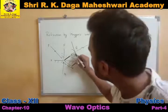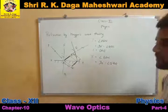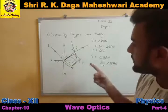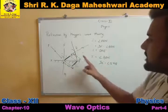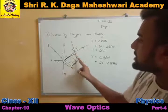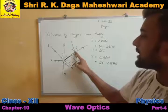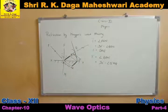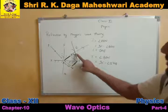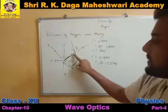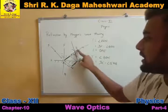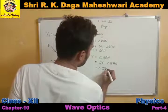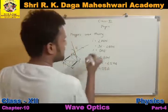Now in the right angle triangle QAB', angle Q is 90 degrees. If I am saying 90 minus B'AQ, that means when I subtract B'AQ from 90, what will I get? I will get QB'A. So the angle of reflection equals angle QB'A. So this will be the angle of reflection.